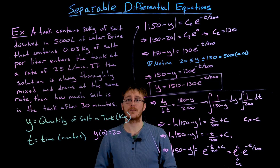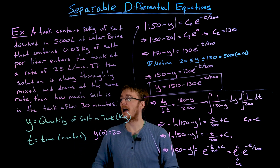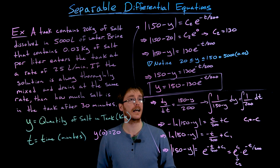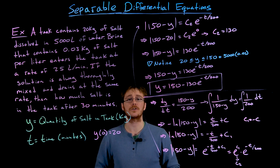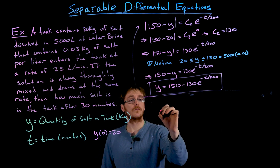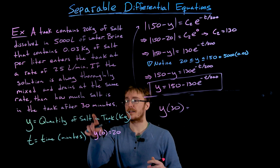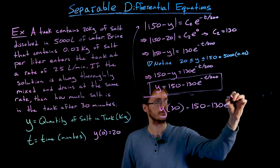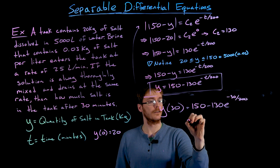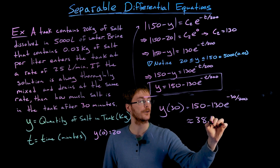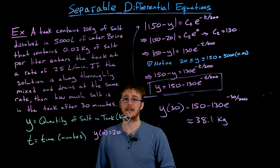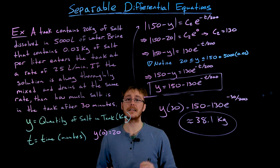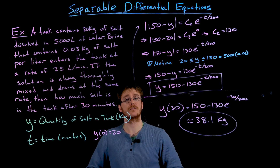We're not quite done — we were asked how much salt is in the tank after 30 minutes. We plug t = 30 into our solution: y(30) = 150 minus 130 · e^(negative 30/200). Entering that into a calculator gives approximately 38.1 kilograms of salt after 30 minutes.